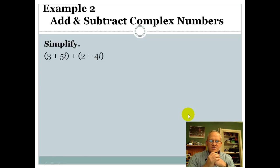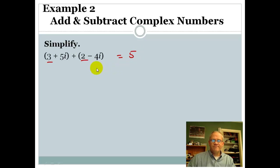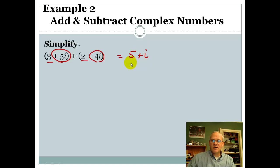This next part is pretty easy — really nice. We want to simplify and add two complex numbers. It looks like it might be a little complicated, but remember when we added binomials, like x plus 2 and x minus 4 — we just added the x's together and the numbers together. Same thing here: just add the like terms. So 3 and 2 are like terms, we add those to get 5. And the 5i and the negative 4i add together — 5i minus 4i is 1i, which is just plus i. So 5 plus i would be our solution.